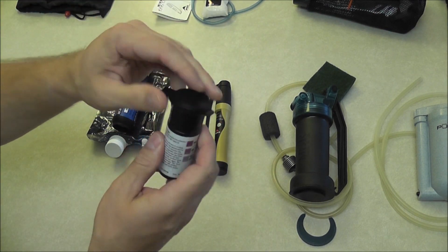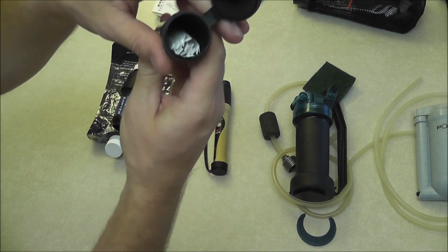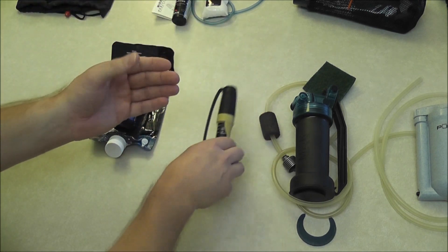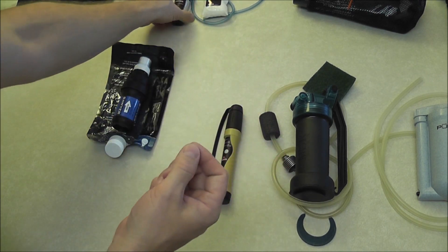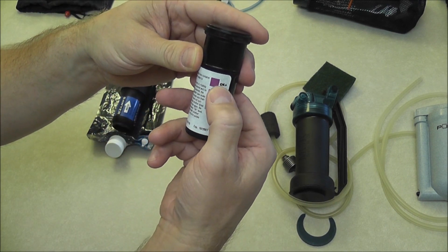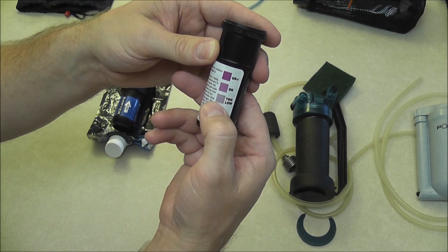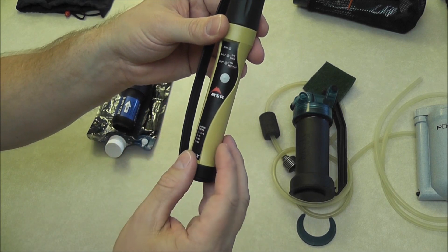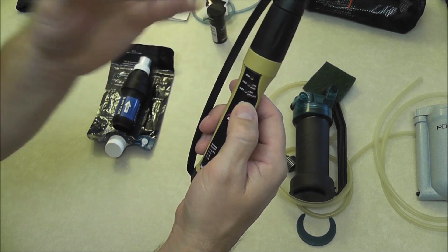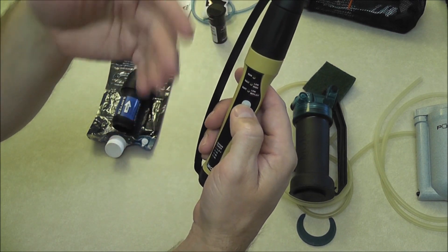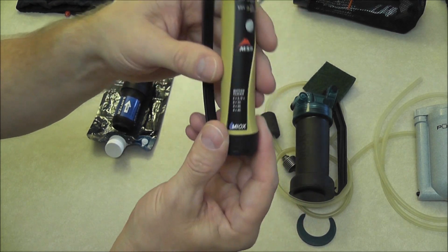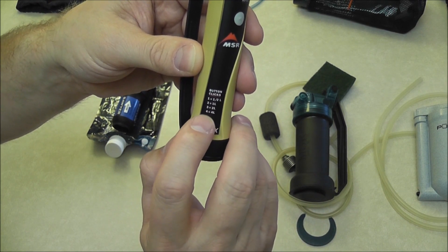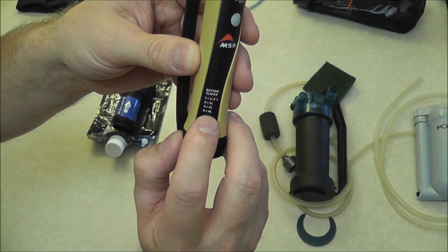This system comes with test strips—like a litmus strip. Once you treat the water and pour it into a container, dunk the strip in and match the color. Dark purple is okay, medium purple is okay, light purple means not enough solution—you might need another dose. The number of times you push this button depends on how much water you want to treat. One press gives you a half liter, two presses one liter, three presses two liters, and four presses approximately a gallon.